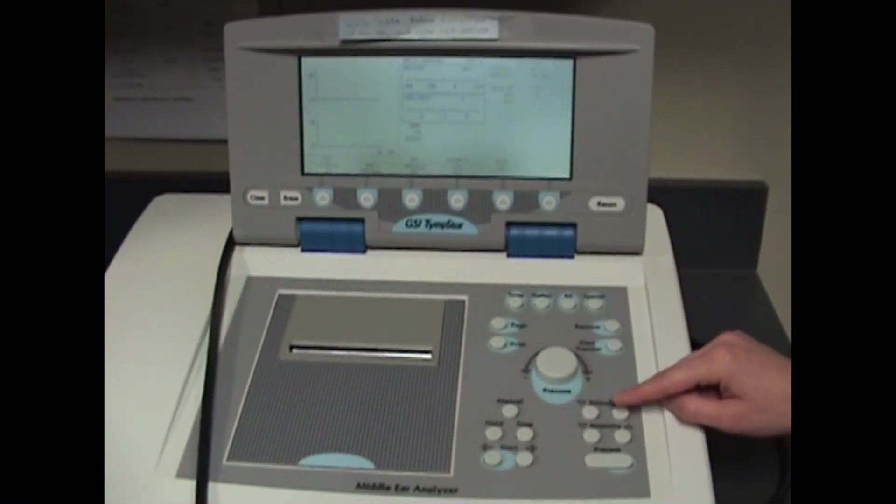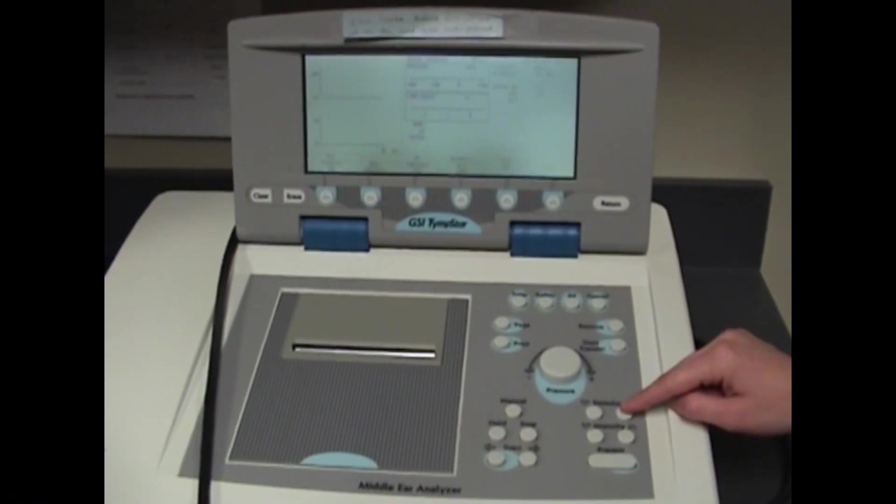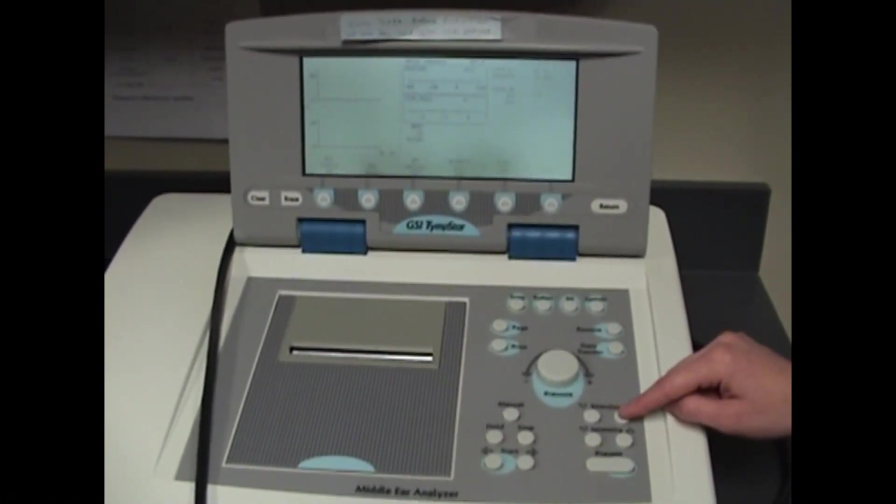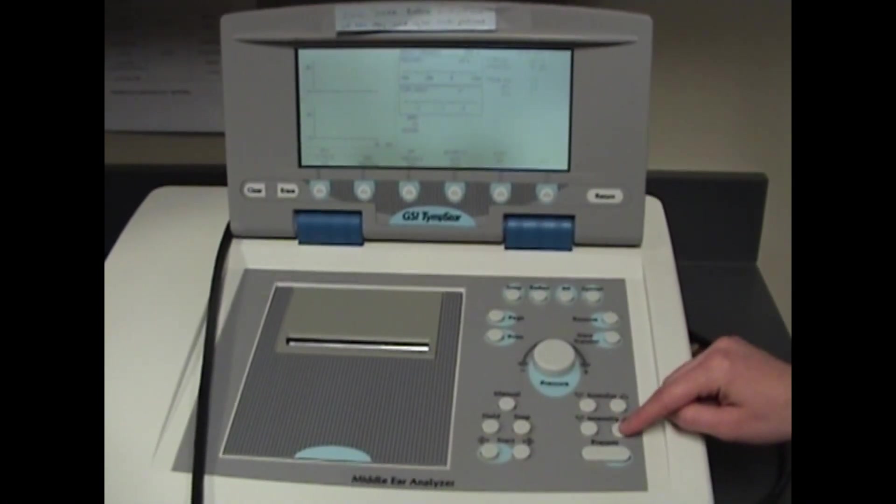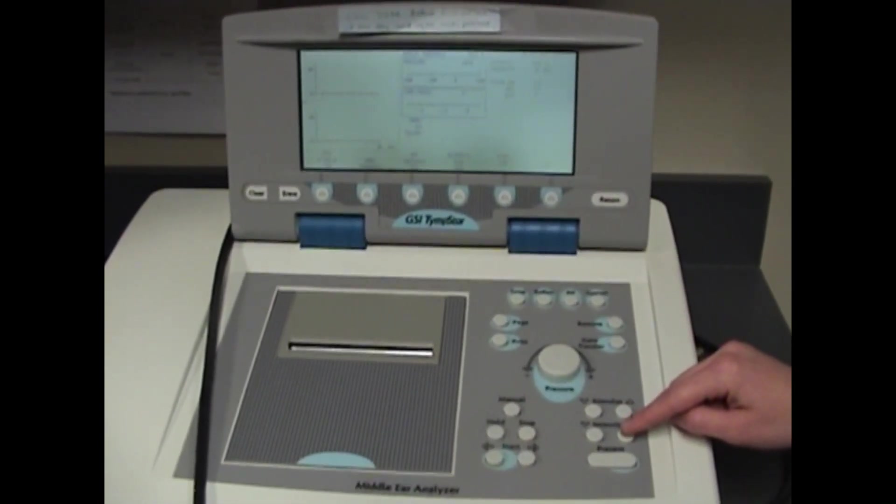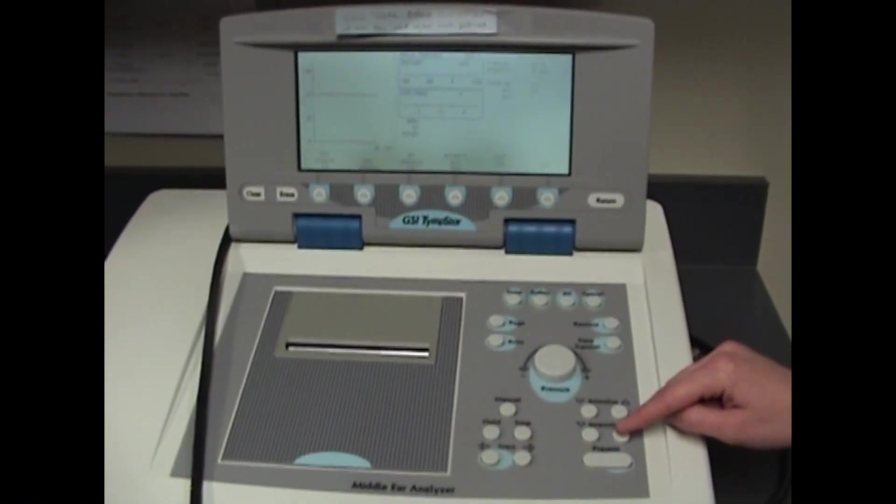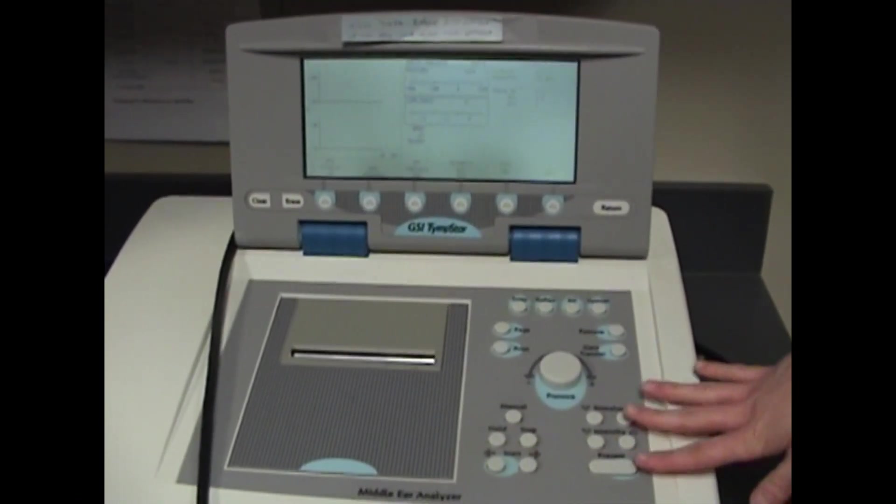The next important thing for getting set up is to look at both your stimulus and intensity. The stimulus button changes the stimulus frequency. For ipsilateral reflex testing, we want to make sure we have 1000 Hertz selected, and we want to start at an intensity of 85 dBHL.